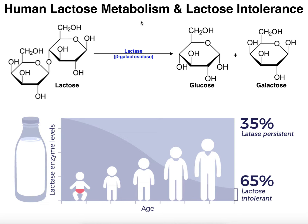So first of all, what is lactose? This is the chemical structure of lactose. It is a disaccharide made up of two individual sugars: glucose, shown up here, and galactose, the sugar down here. They are connected by a glycosidic linkage, making it a disaccharide.